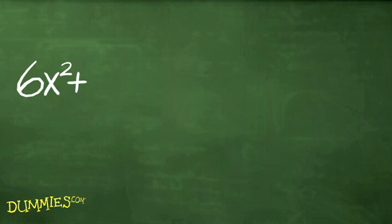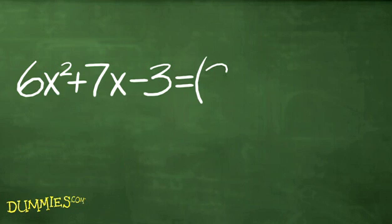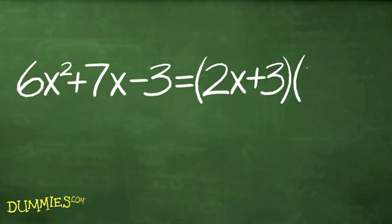Many quadratic expressions, like 6x squared plus 7x minus 3, are the result of multiplying two binomials, or two terms separated by addition and subtraction, together. You can undo the multiplication by factoring them, but what does FOIL really stand for?